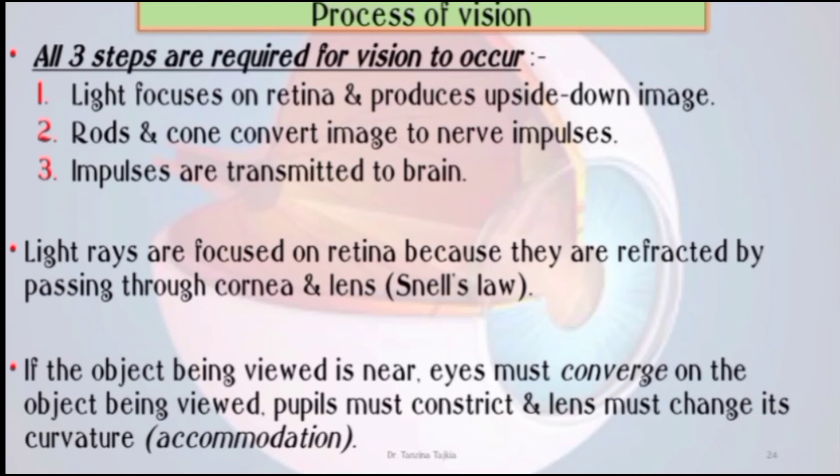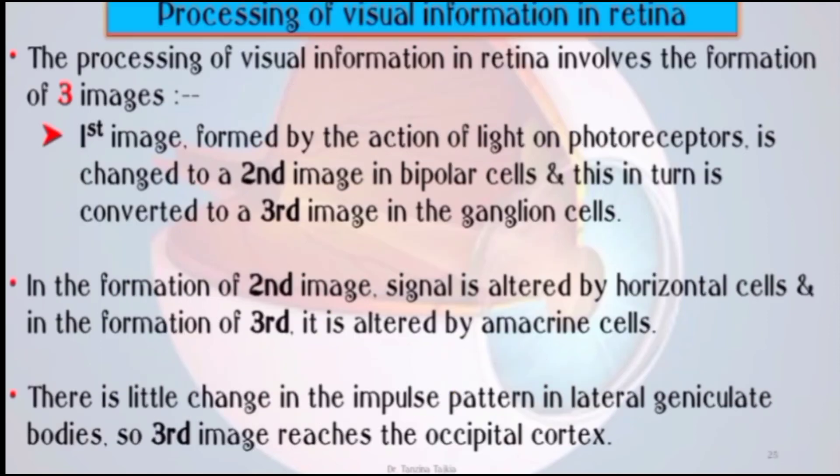This is called Steinheil's law. If the object being viewed is near, the eyes must converge on the object, the pupil must constrict, and the lens must change its curvature — a process called accommodation.